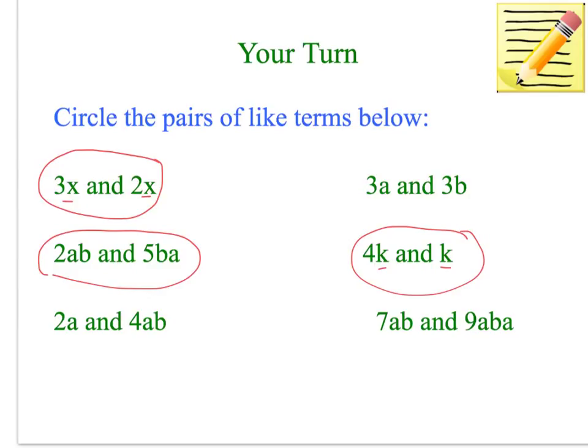2a and 4ab, no, they're not the same because even though they've both got a, the second term has a b. So they are not like terms. And the last one here, 7ab and 9aba, they are not like terms because they don't have exactly the same amount of variables.